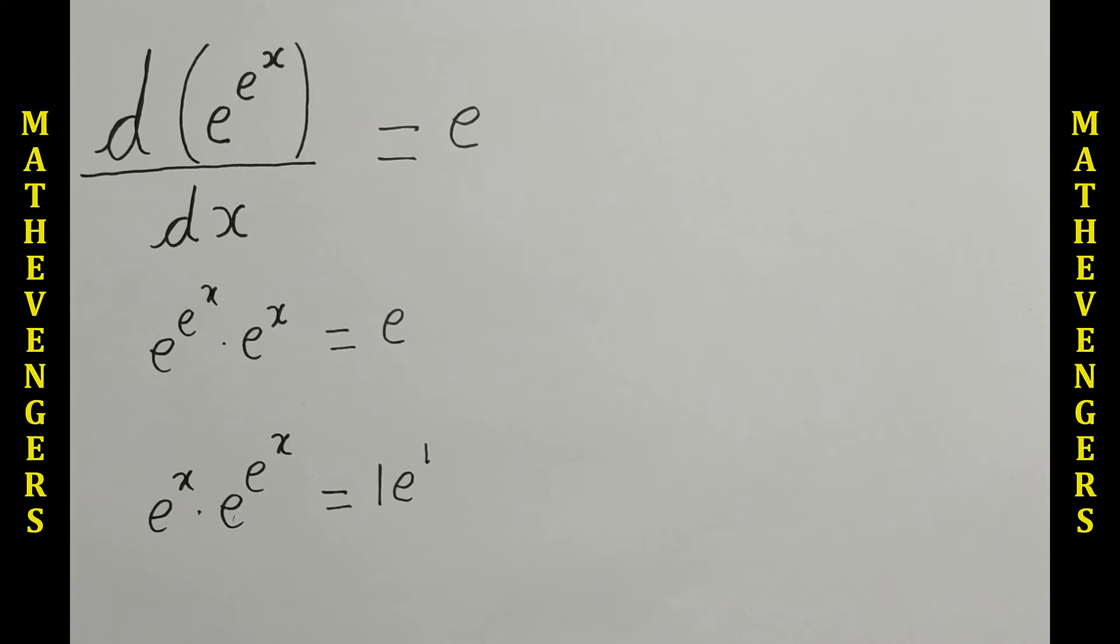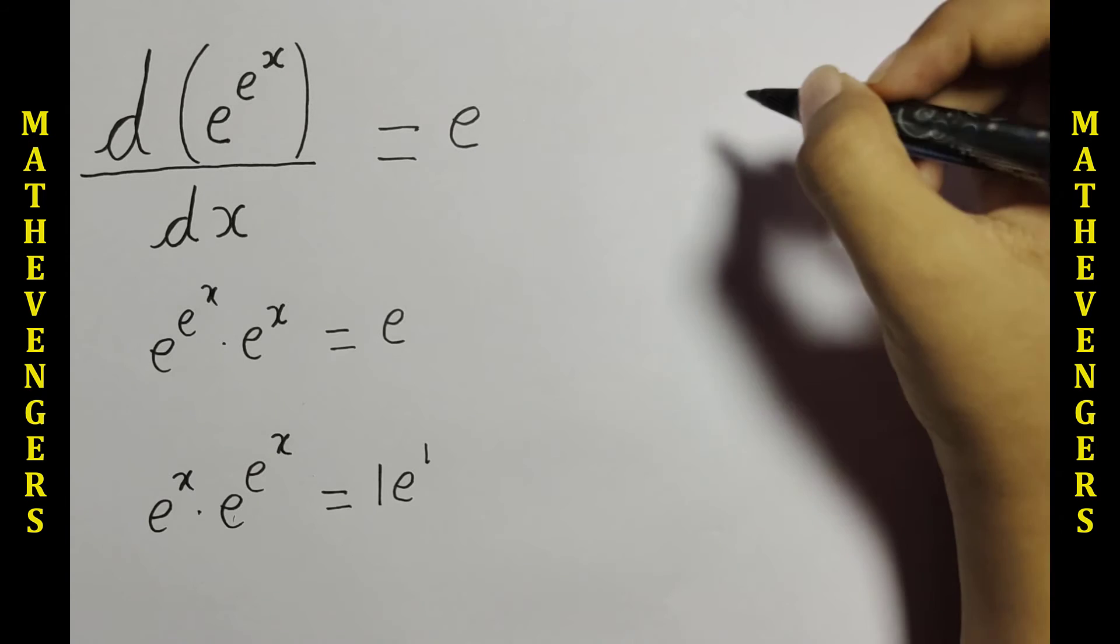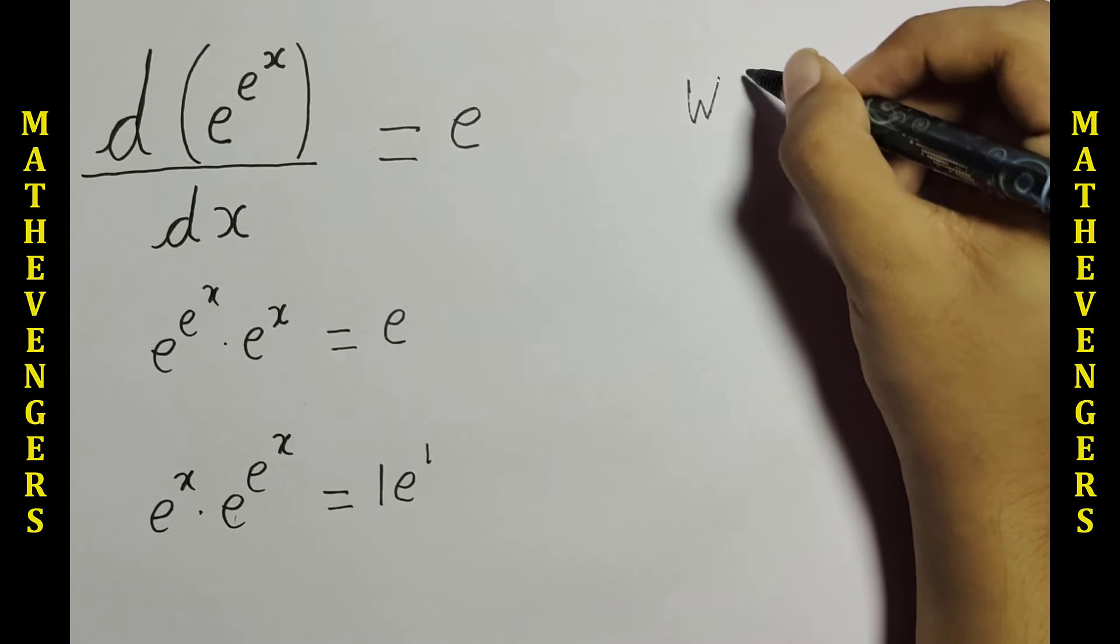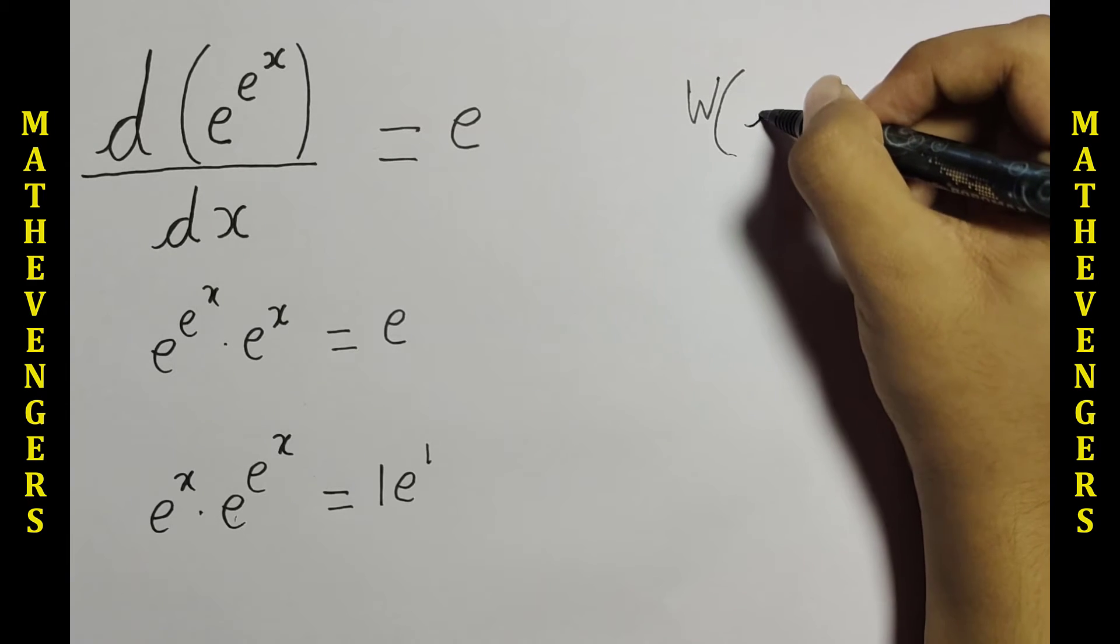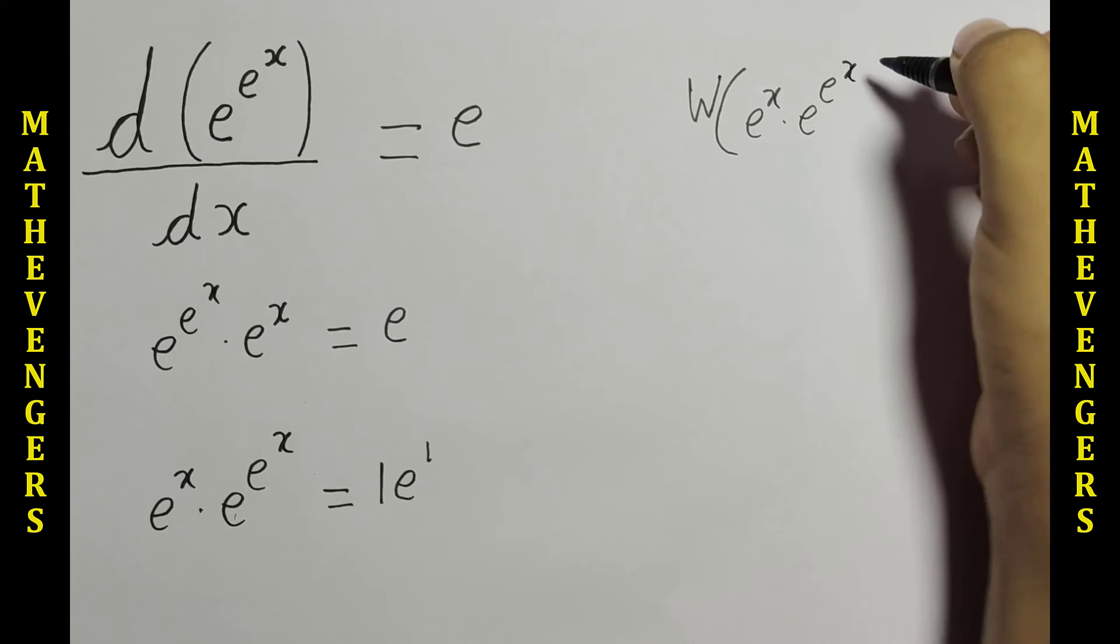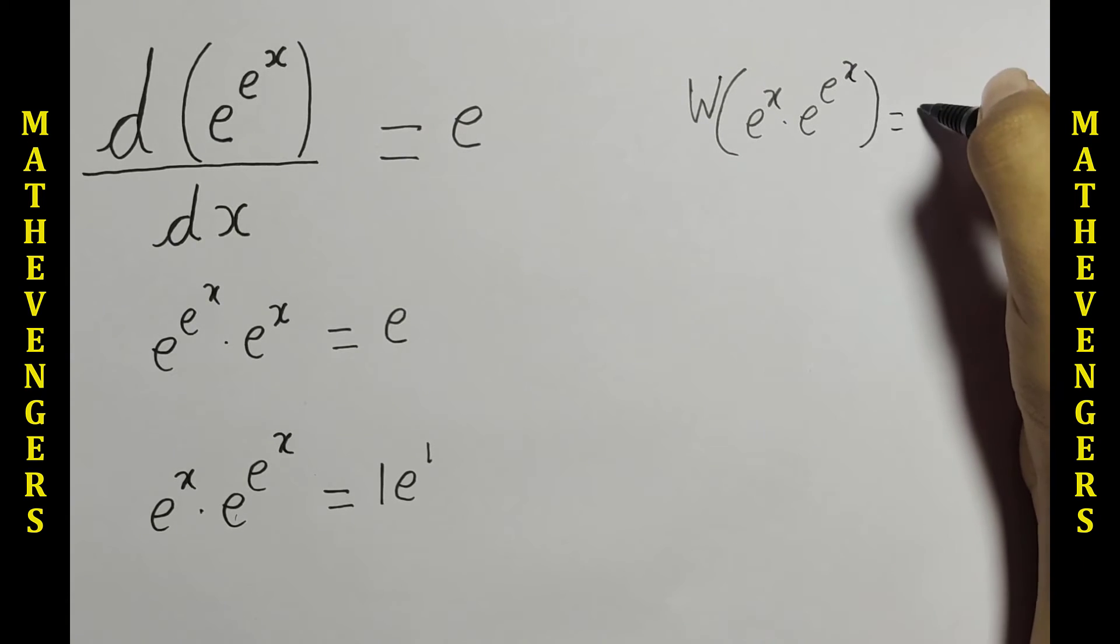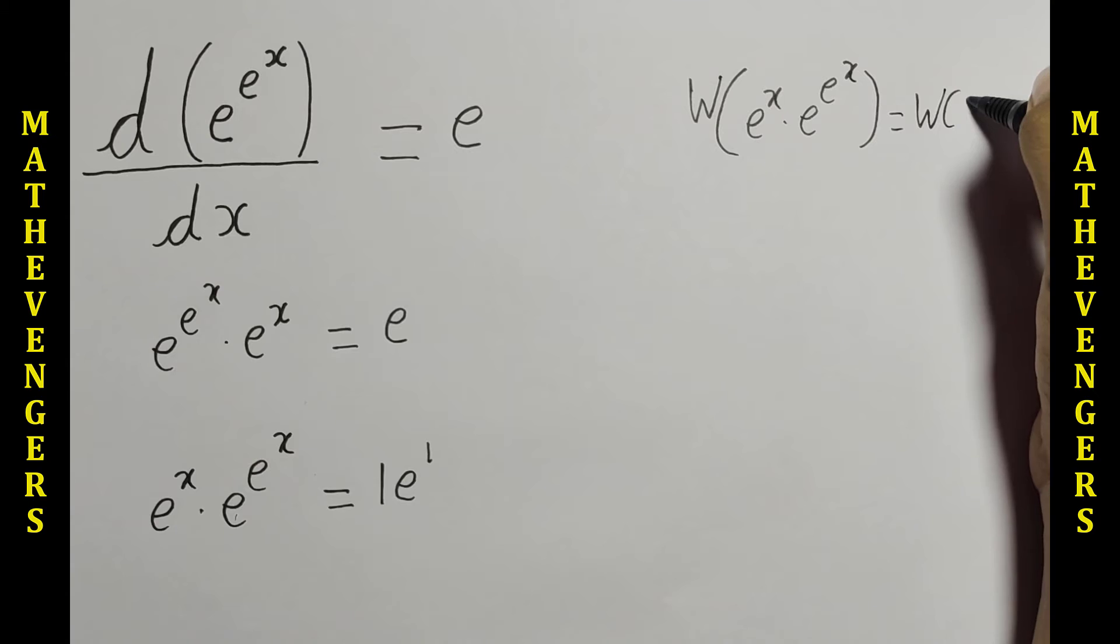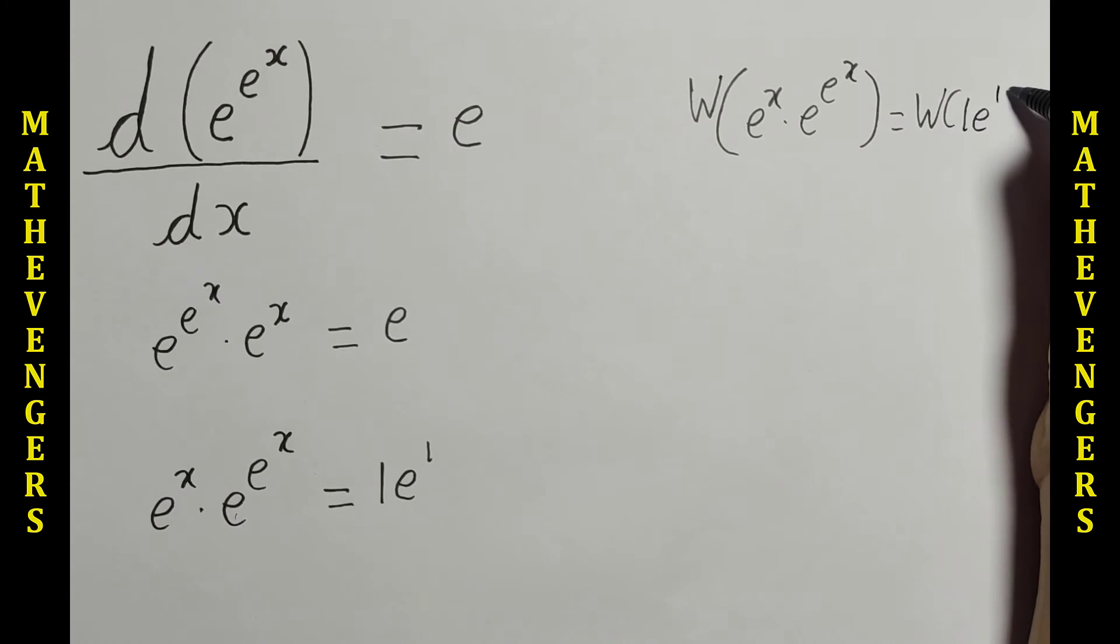Now after using Lambert W function on both sides, we will get W of e to the x times e to the e to the x equals W of 1 times e to the 1.